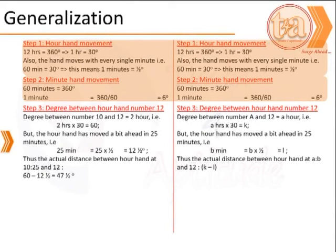Note, between this time, the minute's hand movements would have also helped the hour hand move further. Let us say b minutes. And therefore, the hour hand would have moved b into half a degree. Let us represent it by l. Therefore, the actual separation between the hour hand, between a and 12 o'clock, is k minus l.